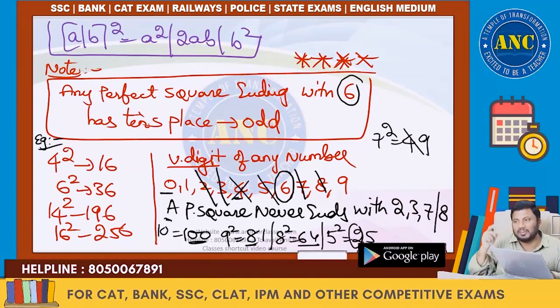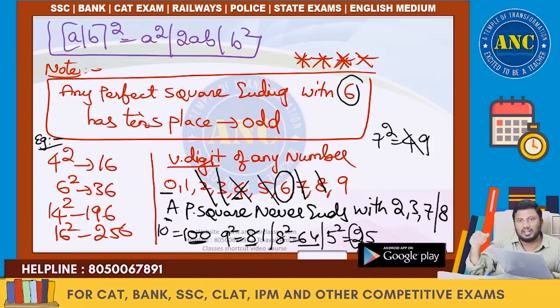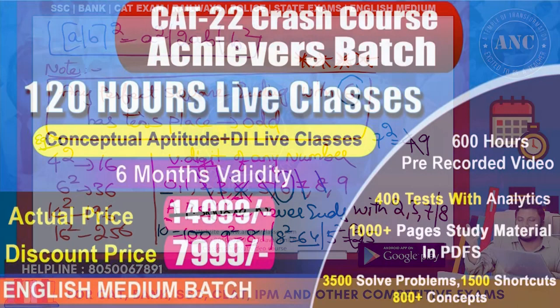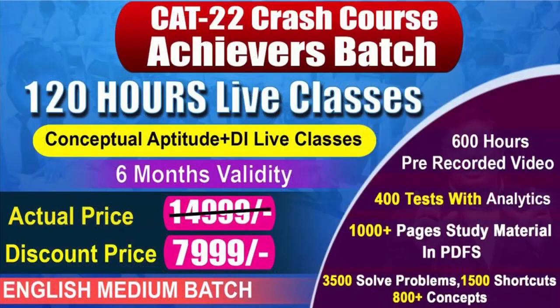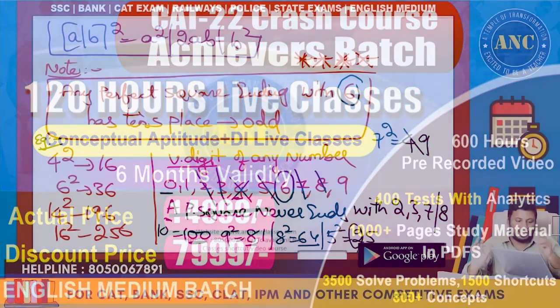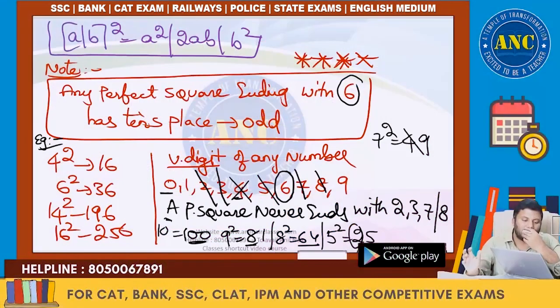For unit digit 9: 7² = 49 (tens digit 4, even), 13² = 169 (tens digit 6, even), 23² = 529, 27² = 729, 33² = 1089 — tens place is even. So unit digit 9 is not possible. This is a very, very important point.